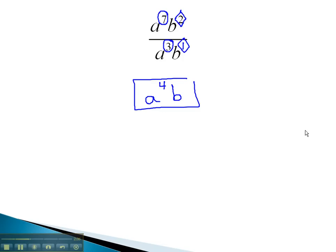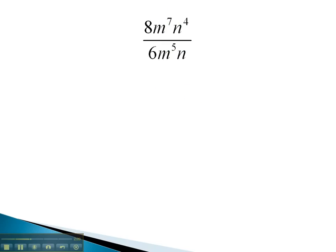Let's try one more example. In this problem, we see we have numbers and variables. We simplify the numbers as always, being careful not to use an exponent property on a base.